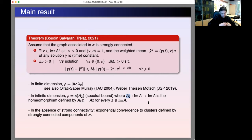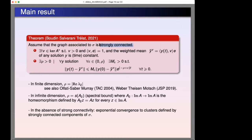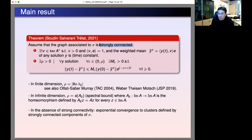We have convergence to consensus whenever the graph is strongly connected. When it is not strongly connected, there may be several — or even infinitely many — strongly connected components. In each strongly connected component one can apply the result, obtaining exponential convergence within each component. This means one has exponential convergence to clusters in that case.